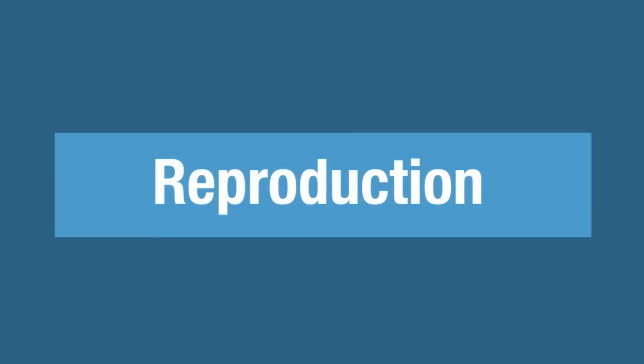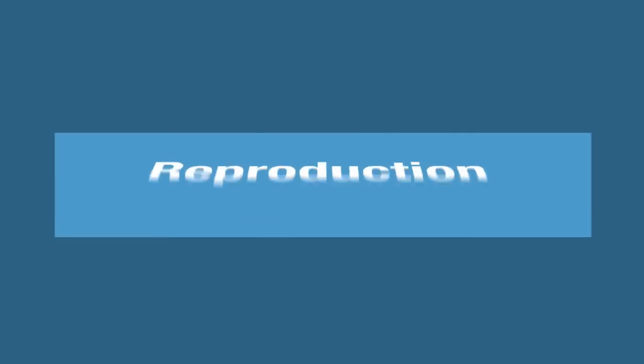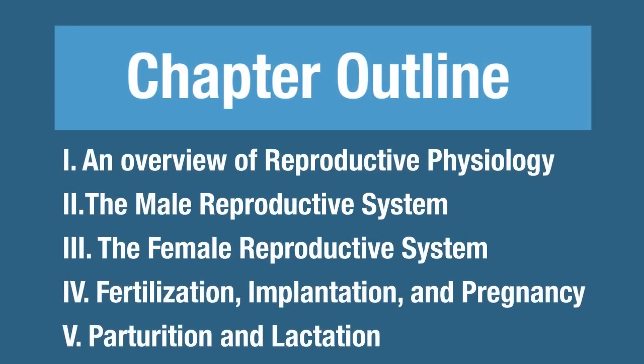This will be the last video lecture on reproduction, and here we're going to focus on parturition and birth. Here's our outline once again, and we are on Roman numeral V. We're going to look at the events of parturition — in other words, the events of birth — and then we're going to look at lactation.